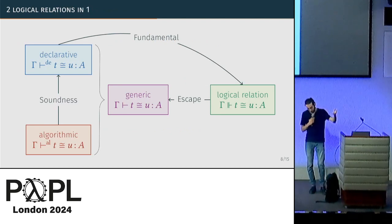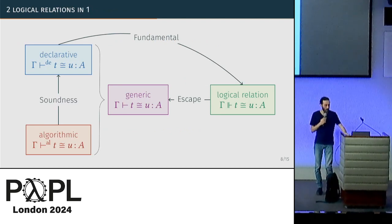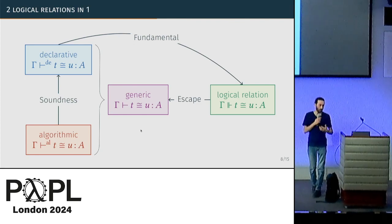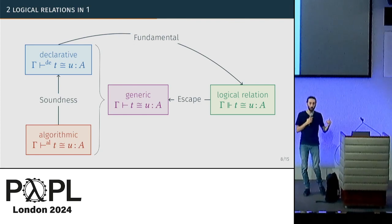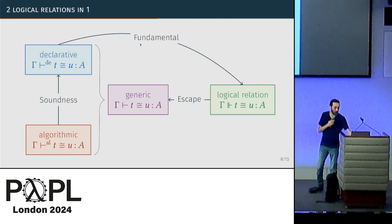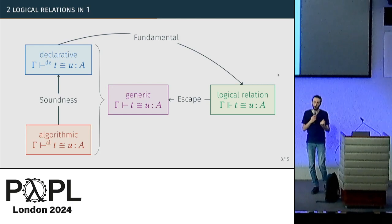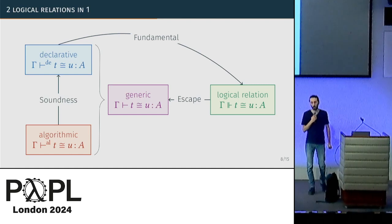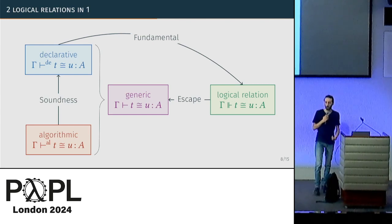Another important aspect of the Agda formalization is generic typing. The idea is to build the logical relation not with respect to the declarative or algorithmic judgment specifically, but with respect to a common generic judgment interface. This means you only need to prove the fundamental lemma of the logical relation — that typing implies the logical relation — once, then use it twice to obtain properties of both the declarative and algorithmic systems. This saves a lot of work since the fundamental lemma requires significant effort.